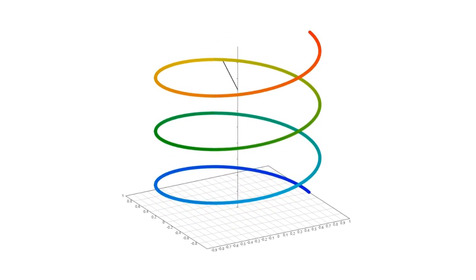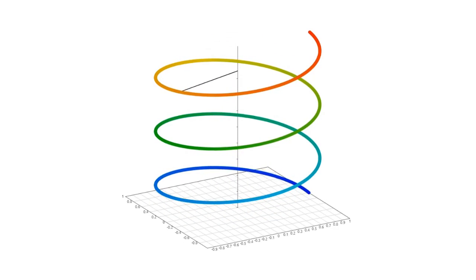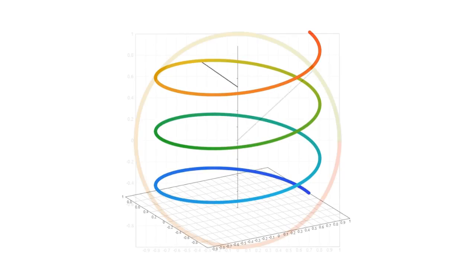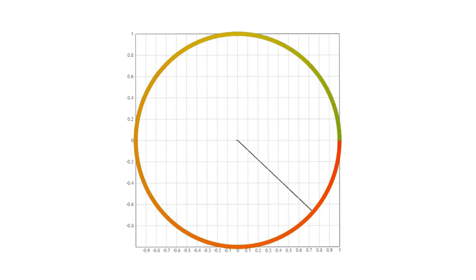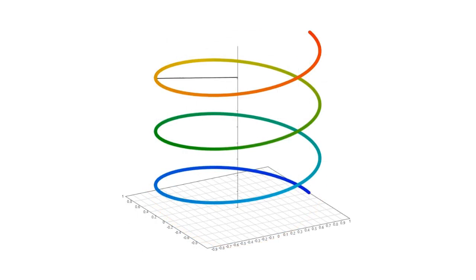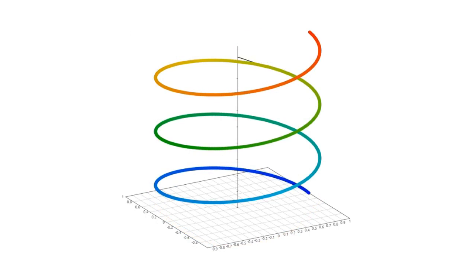However, just as the line can move up the z-axis, it can also move in the opposite direction — down the z-axis. If we look at this in two dimensions, this is equivalent to rotating the other way. When the line moves up the z-axis, its angular velocity or frequency is positive. When the line moves down the z-axis, its angular velocity or frequency is negative. This is one way of understanding negative frequency.